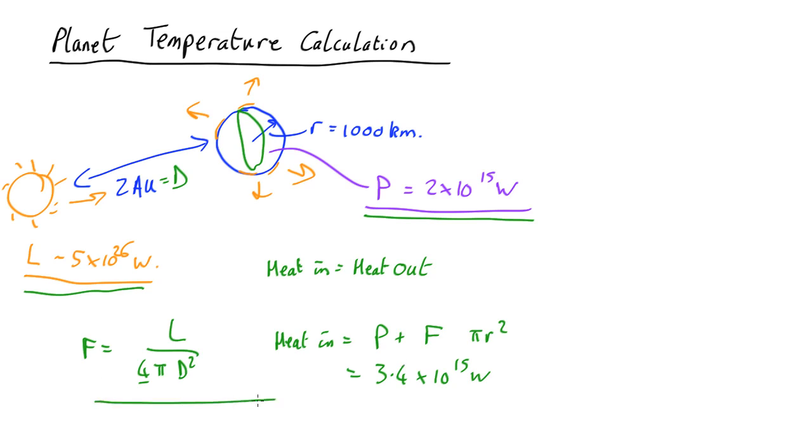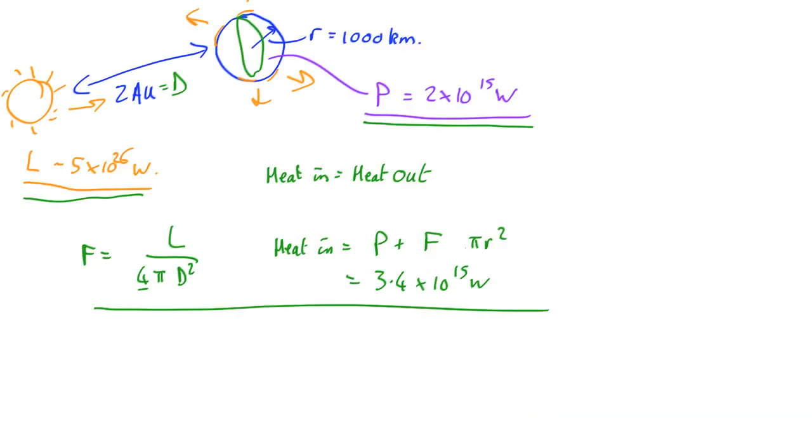Now what's the heat going out? Heat out. We're going to assume the thing radiates like a black body. So the heat out is given by the Stefan-Boltzmann equation, a sigma t to the 4th, where a is the surface area, surface area of the sphere is 4 pi r squared, sigma is the Stefan-Boltzmann constant, 5.67 by 10 to the minus 8, and t is the temperature. So set that equal to the heat in.